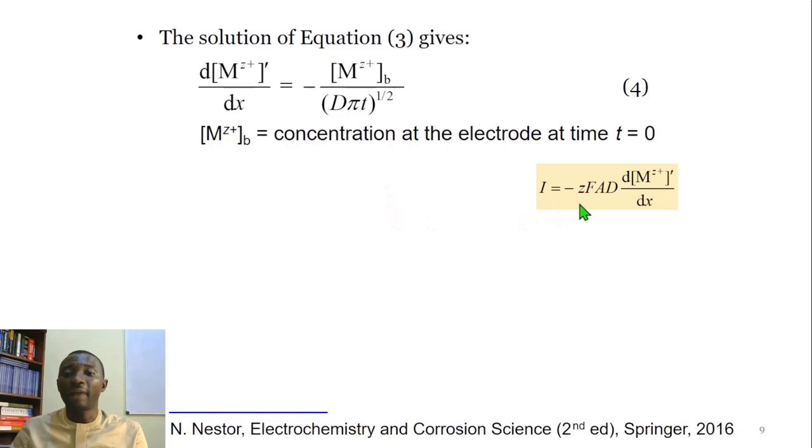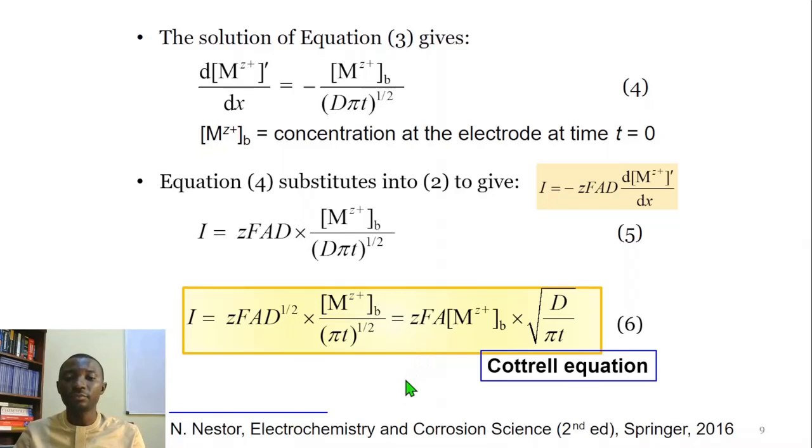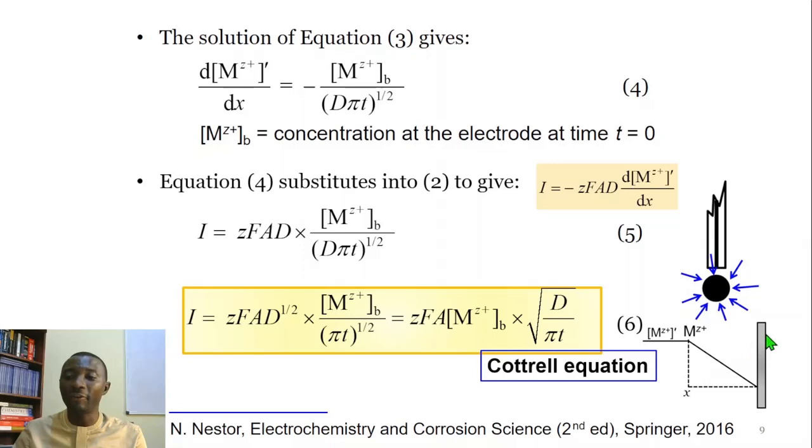Because current is equal to this expression, here is the concentration gradient. And because we now have concentration gradient to be equal to this, we can simply substitute this expression there. That gives equation 5. And equation 5 rearranges to equation 6, which is the Cottrell equation. Now, this equation is based on a planar electrode whose surface area can be determined quite readily once the parameters are known. That's the quantities, the length, the breadth, the thickness.